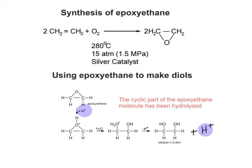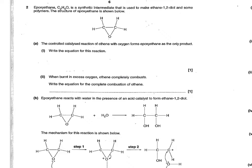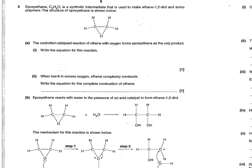Although it may look like a simple reaction, the mechanism is fairly complicated. There was an exam question from a few years back that gave you some information and asked you to deduce what was going on in the mechanism. The first part of the question states that epoxy ethane is a synthetic intermediate used to make ethane-1,2-diol and some polymers. The controlled catalysed reaction of ethane with oxygen forms epoxy ethane as the only product, and it asks you to write an equation. There's enough information to deduce the answer.